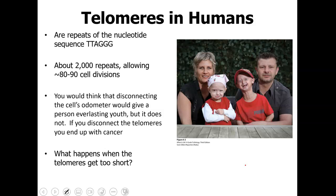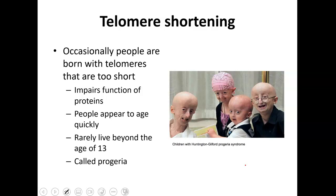You would think that telomeres, like an odometer, would give a person everlasting youth, but they don't. If you disconnect those telomeres, you're going to end up with cancer — it's not going to know that it needs to stop dividing and it will continue on. This is what happens when those telomeres get too short and that cell does not go through apoptosis. Occasionally, people are born with telomeres that are too short to start with, which impairs the function of specific proteins. People start to age a lot quicker, and in this case it's called progeria — it's rare for them to live beyond the age of 13.